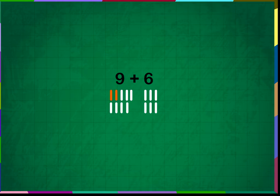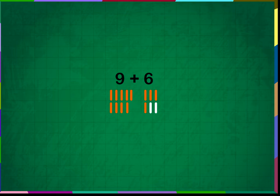Counting all the lines: 1, 2, 3, 4, 5, 6, 7, 8, 9, 10, 11, 12, 13, 14, 15. The sum is fifteen.